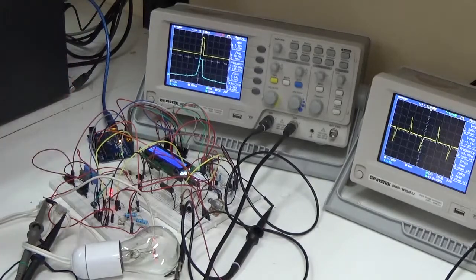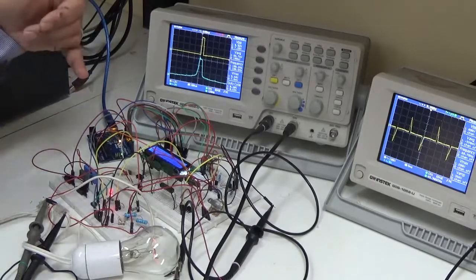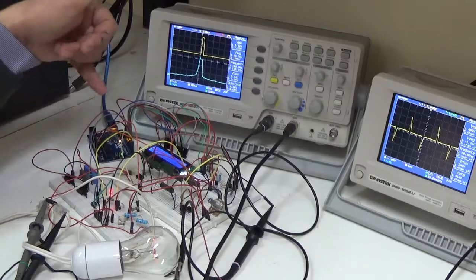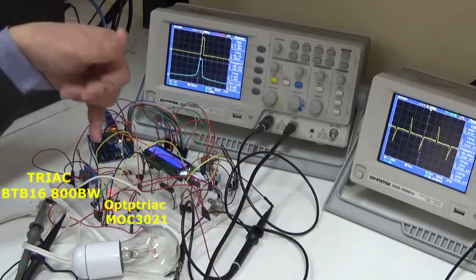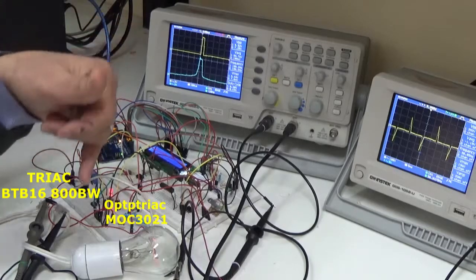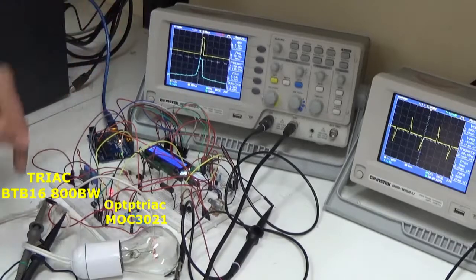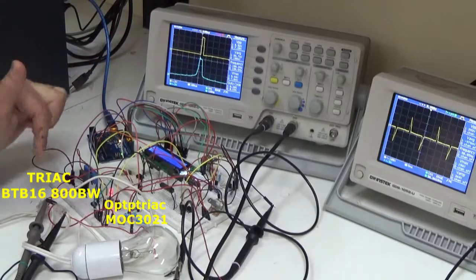In this circuit, we will have the output pin from Arduino pin number five going to the opto triac, which is the MOC3021. The output from the opto triac goes to the triac here, which will eventually control the whole circuit. We can start by the minimum output from the Arduino.